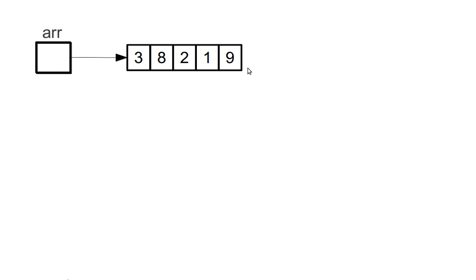That's the basic idea of mutability — the box over here you can change. In the case of an int, ints are not mutable. Of all the different types we've talked about, the only one so far that is mutable is arrays. Ints, doubles, strings, lists, tuples — all of those are immutable. All of the methods on them leave them unchanged. So arrays are our only example so far of something that is mutable.